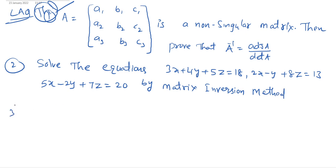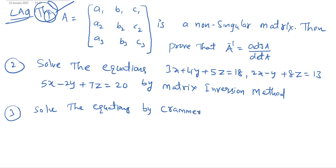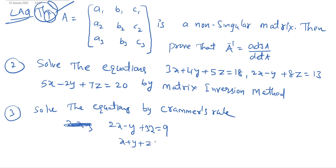Third problem: solve the equations by Cramer's rule. 2x − y + 3z = 9, x + y + z = 6, x − y + z = 2. These three are the most important for IP exams.